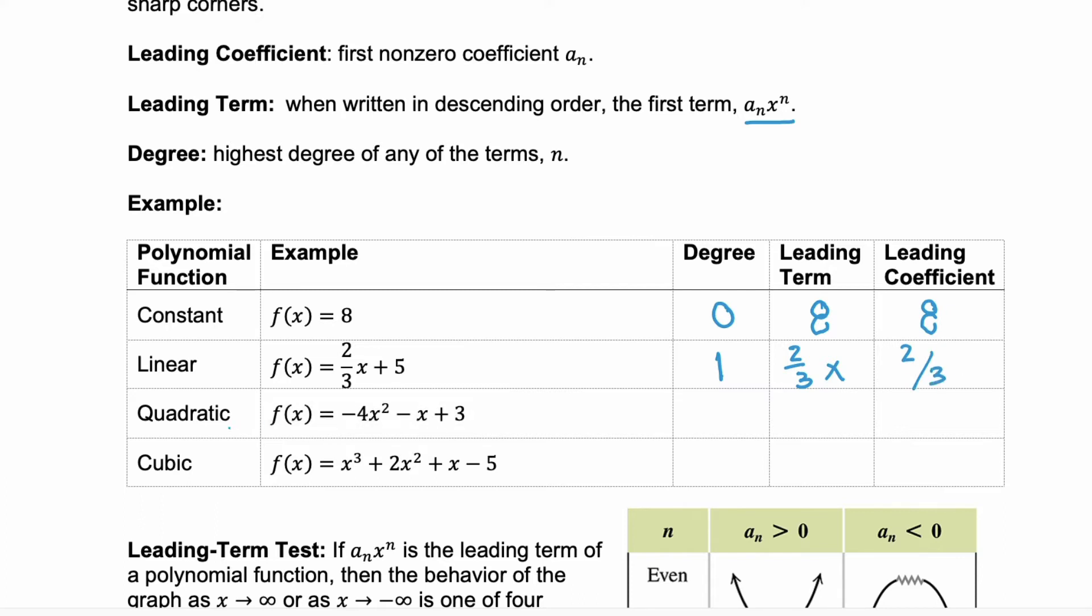Next, we have a quadratic, -4x² - x + 3. Here, we have a degree of 2 because it's x squared. Our leading term is -4x². You include the negative sign. The leading coefficient is just the negative 4.